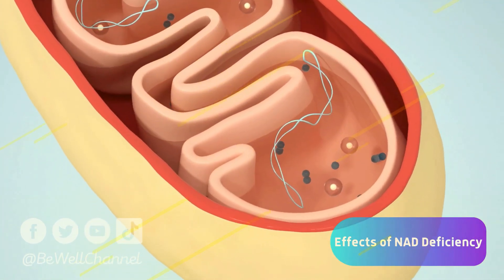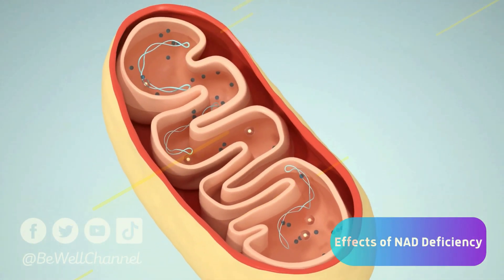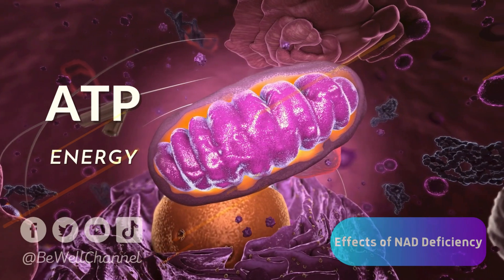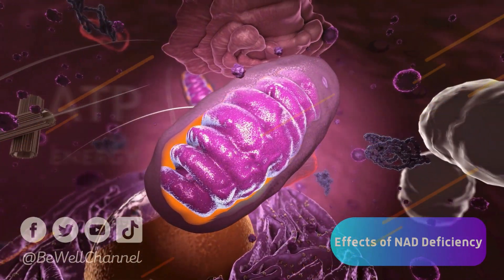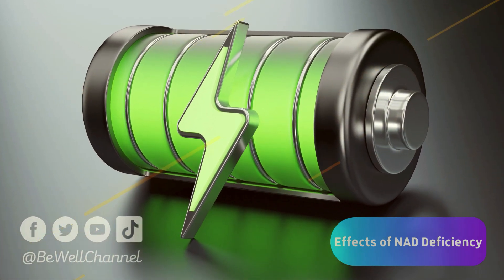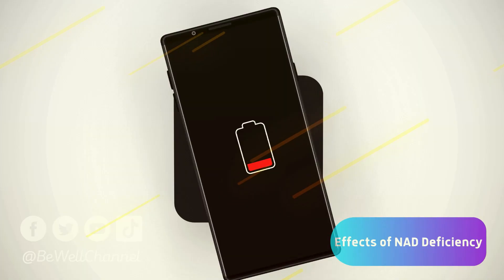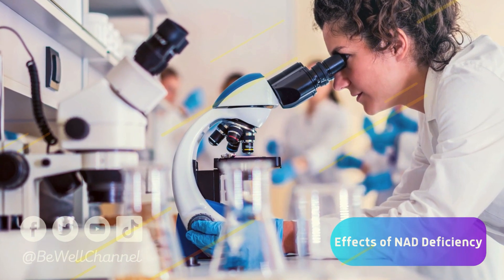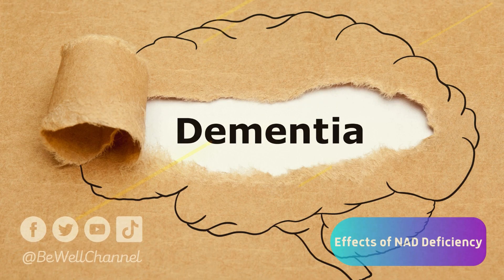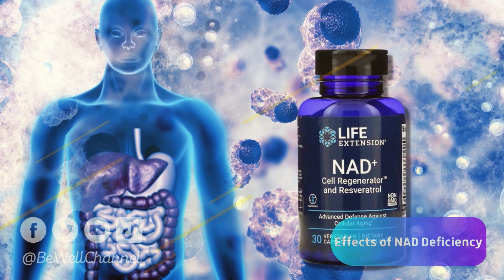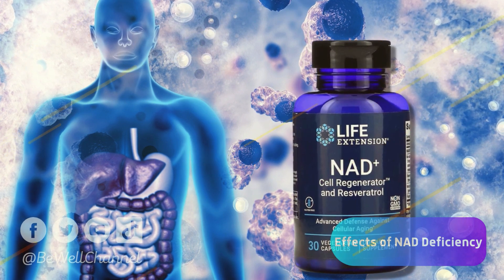Without NAD, the cell's powerhouse — the mitochondria — will not function properly. As a result, our cells' ability to generate ATP energy becomes impaired. Having healthy mitochondria that make ATP is like having a fully charged smartphone, allowing one to get more work done throughout the day. However, the older the phone is, the quicker the battery wears out — our cells are no different. NAD decline might be a powerful trigger of numerous conditions including heart disease, dementia, and metabolic issues like obesity and diabetes. NAD supplements can boost the levels of this coenzyme in the blood and cells to help maintain good health as we age.